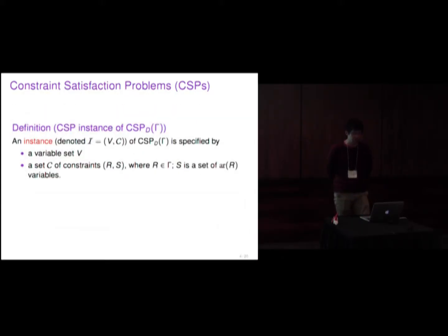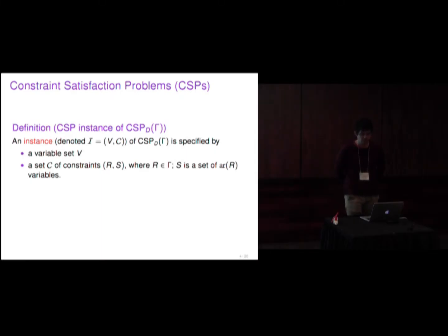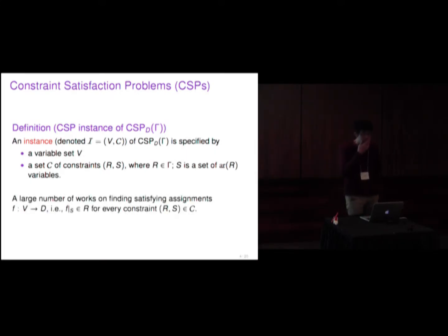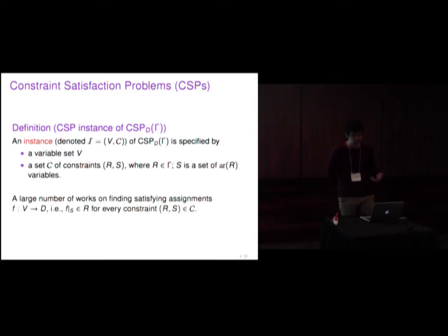An instance of CSP specified by D and gamma is given by a variable set B and a set C of constraints. Each constraint is of the form (R, S), where R is a relation taken from the constraint language gamma, and S is a set of variables. We want to find an assignment F such that if we restrict F to S, it must be a tuple in R for every constraint (R, S).